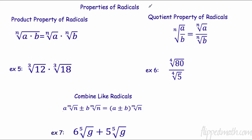So now we have properties of radicals — much like properties of exponents. First one is the product property. I can go one of two ways: if I have the fourth root of 120, I can split it into the fourth root of 12 times the fourth root of 10, because 12 times 10 is 120. Also, if I have the same root, I can multiply the numbers together: 12 times 10 is 120, and put it all under one radical.